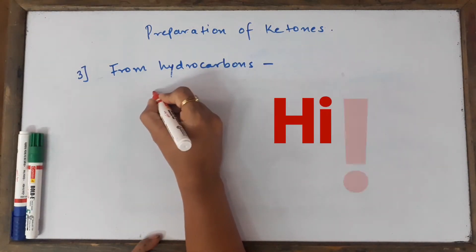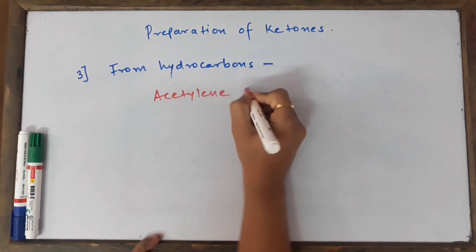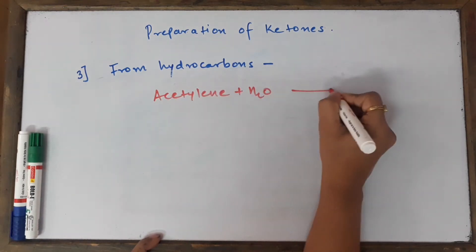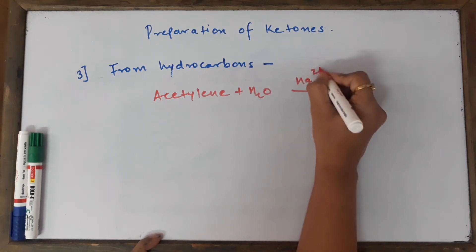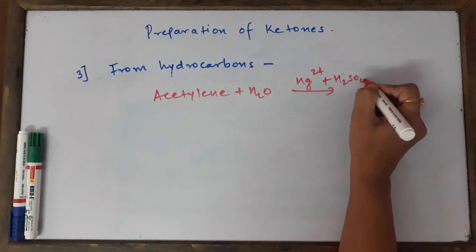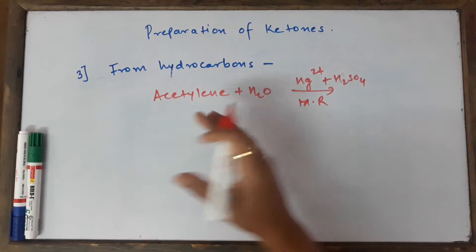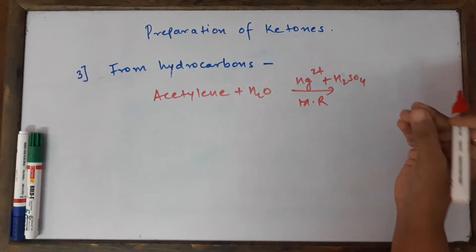In our previous video we had already seen that if we start with acetylene and we add water to it in the presence of catalyst mercuric sulfate (Hg2SO4) in presence of concentrated H2SO4, we are going to use Markovnikov's rule and we are going to add water to it. There's only one aldehyde which we can prepare by this method.